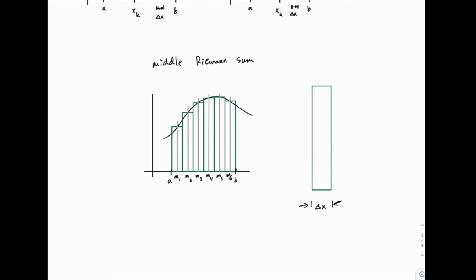And again, that width delta x depends on how long our interval from A to B is, and how many rectangles we're using, how many subintervals we divide this into. You can find the total length and then divide by n, the number of subintervals, and that tells you the thickness or the width of each rectangle.